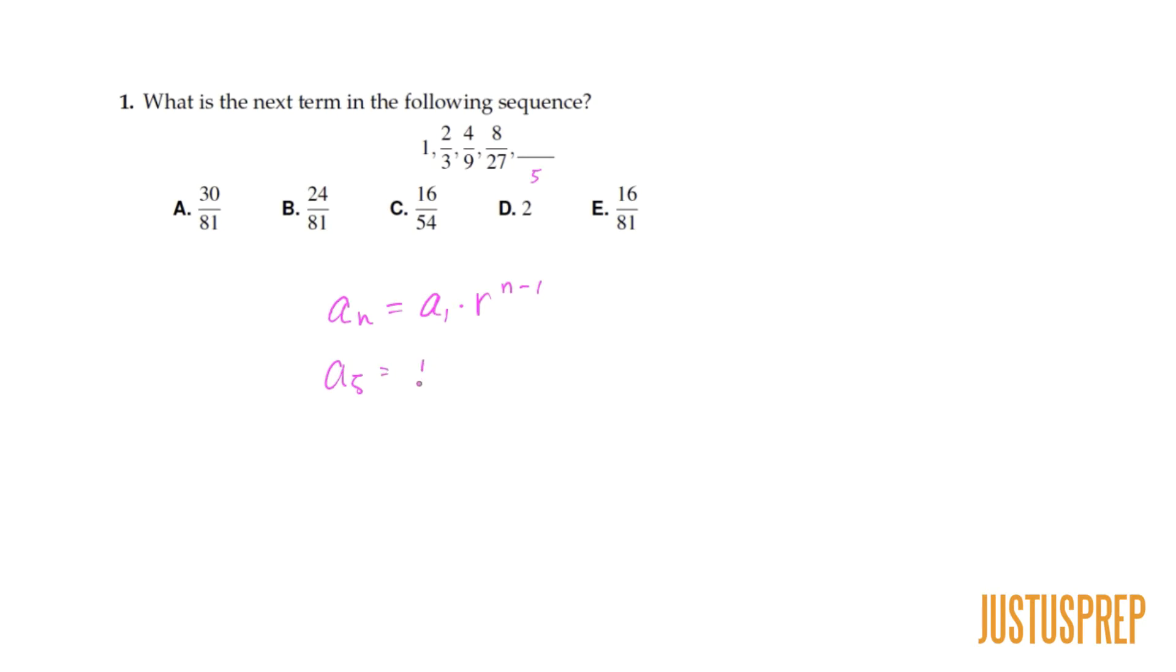The first term is one. The common ratio, so we have to think what is the common ratio? Well to get from one to two-thirds, so one times x equals two-thirds, that just means x is two-thirds. So the common ratio here is two-thirds.